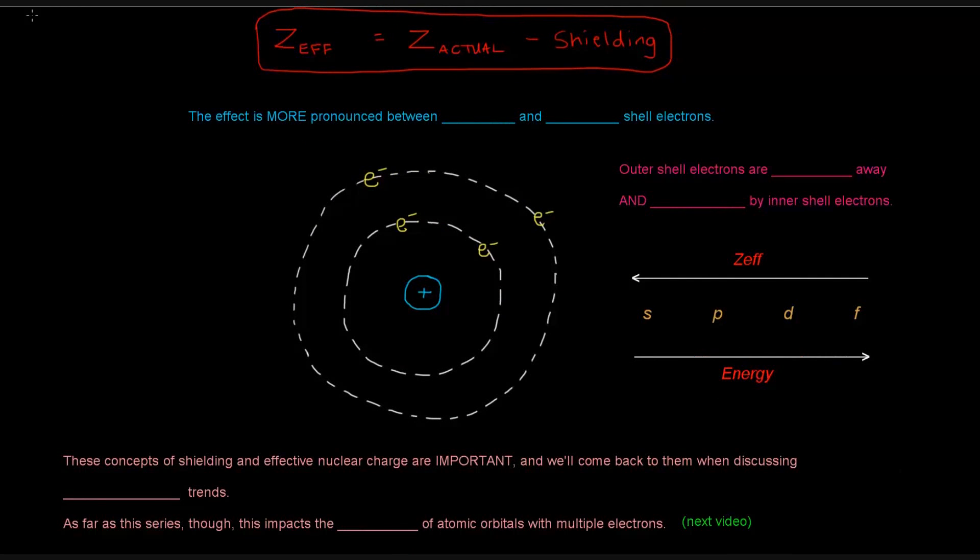So now, the effect of shielding is more pronounced between inner and outer shell electrons. In the previous case, they were kind of in the same energy level. But now, it's a situation where we have more than one energy level.